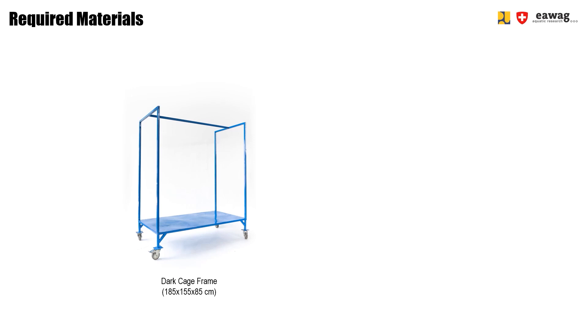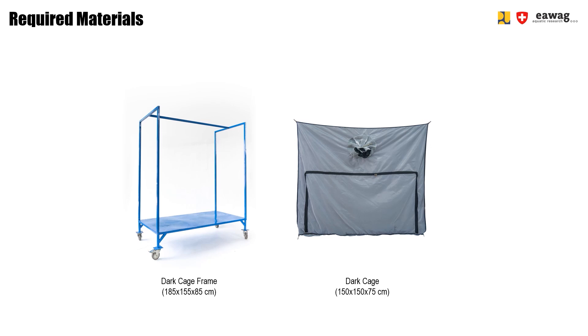Because this stage doesn't require many operations, the number of materials required is also limited. The items required are the dark cage frame — possibly on wheels to be mobile — and the dark cage itself, made up of two materials: the black inner fabric and the white outer open fabric, which allows air in but no light. The large zipper visible in front allows the 16 pupation boxes to be placed inside. The pupation boxes themselves were presented in the previous module.